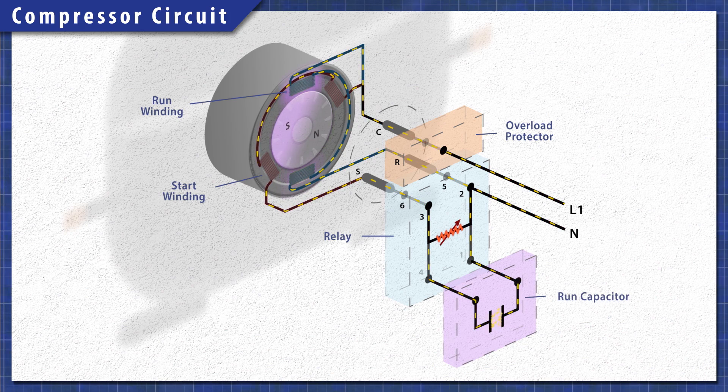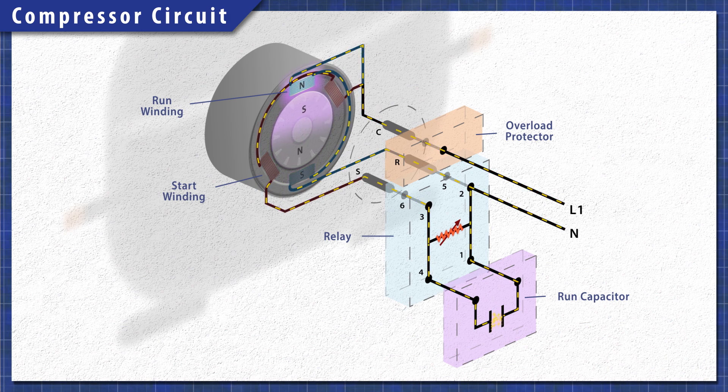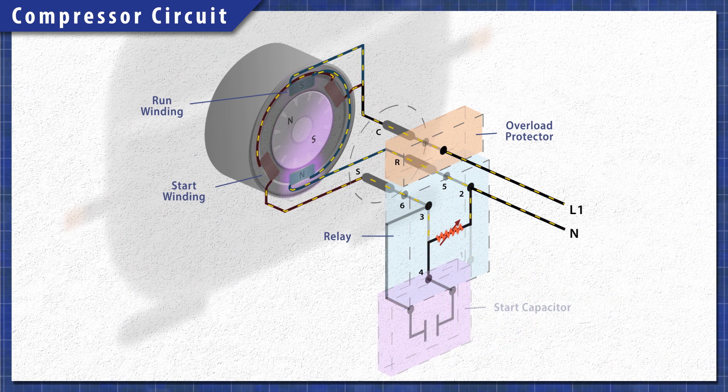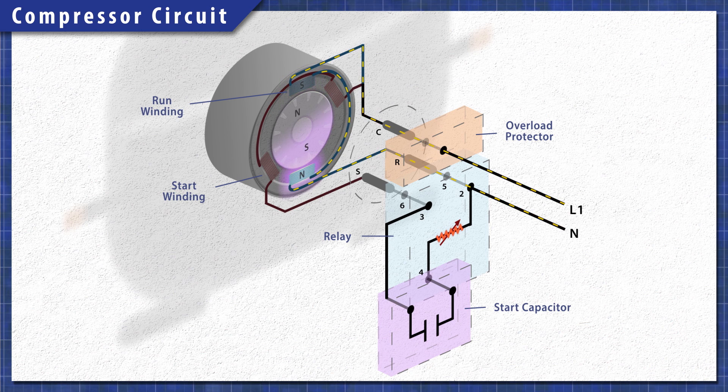Other models also use a run capacitor to help increase the efficiency. This run capacitor allows the start winding to stay energized as the motor runs. Other fridges might use a start capacitor which is taken out of the circuit by the relay shortly after startup.